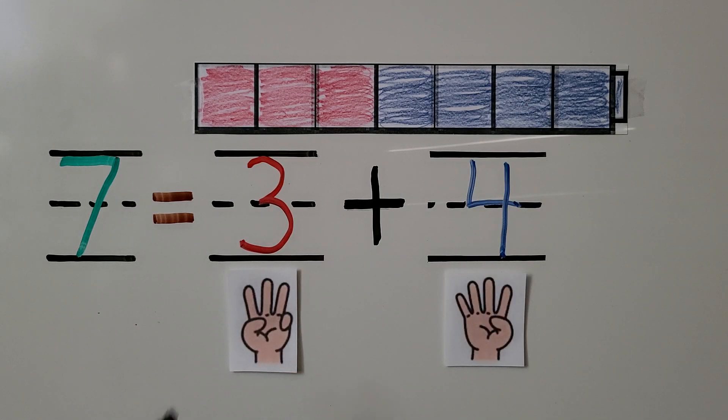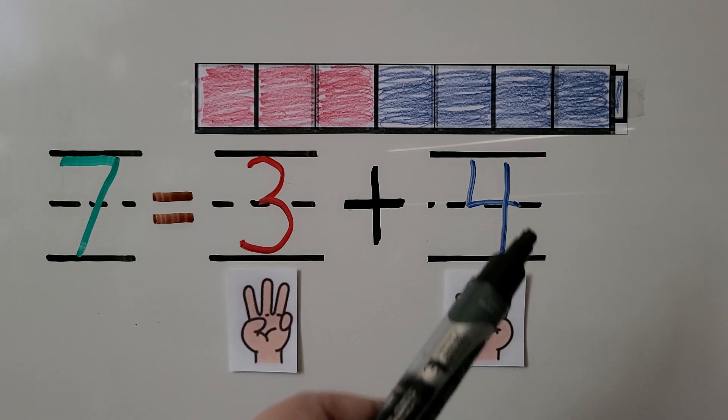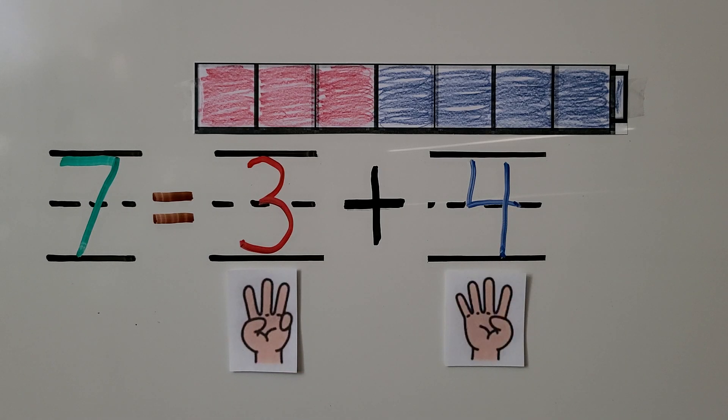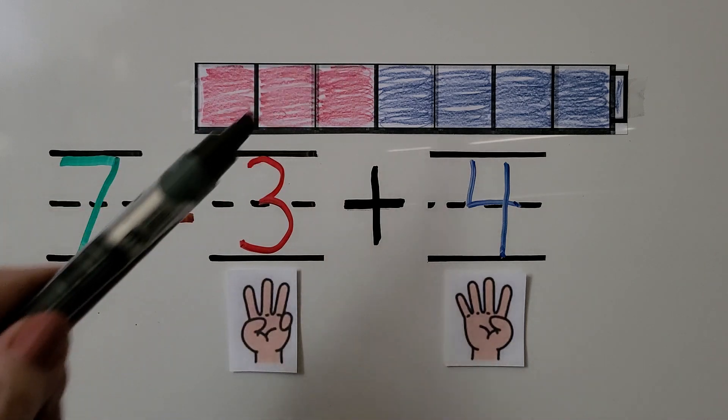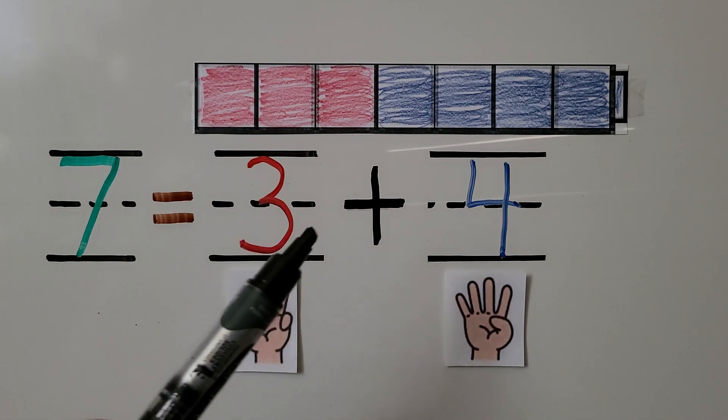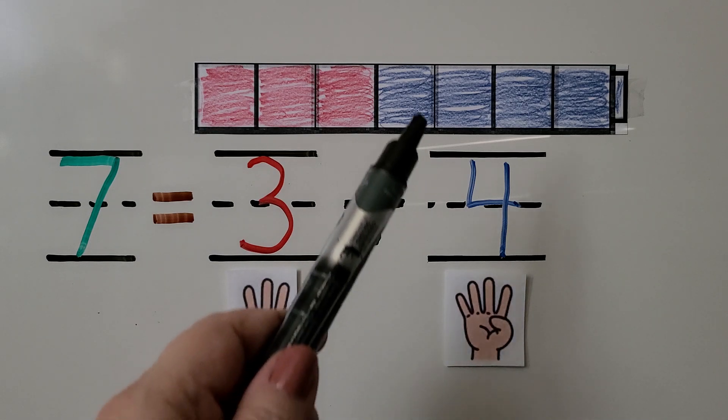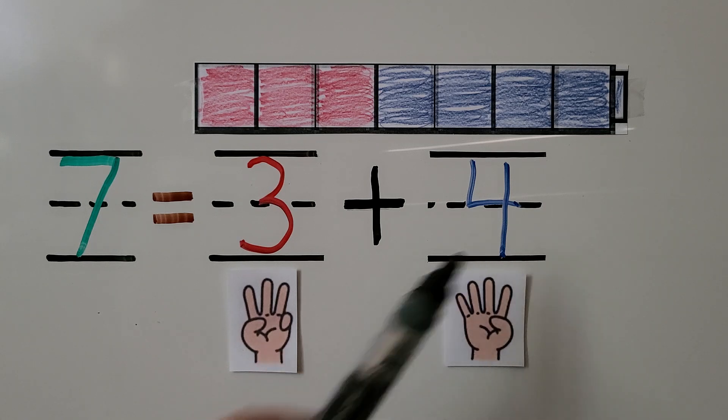And we can write the number of red and write the number of blue, but we have to be careful writing the numbers in the equation. We count one color: 1, 2, 3. Then we write the number, 3. Then we count the other color: 1, 2, 3, 4. And we write that number. In this case, it's a 4.